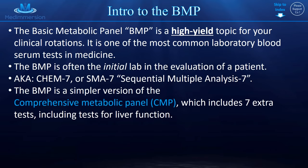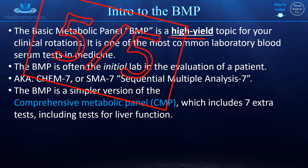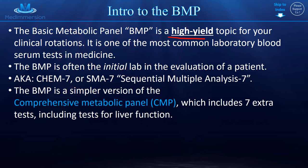The BMP, the basic metabolic panel, is high yield — you've got to know it, because it is so stinking common. You are going to order BMPs until your fingers turn blue. In other countries, other than the U.S., you might also hear it called a Chem 7 or an SMA 7 — tomato, tomato, it's all the same thing.